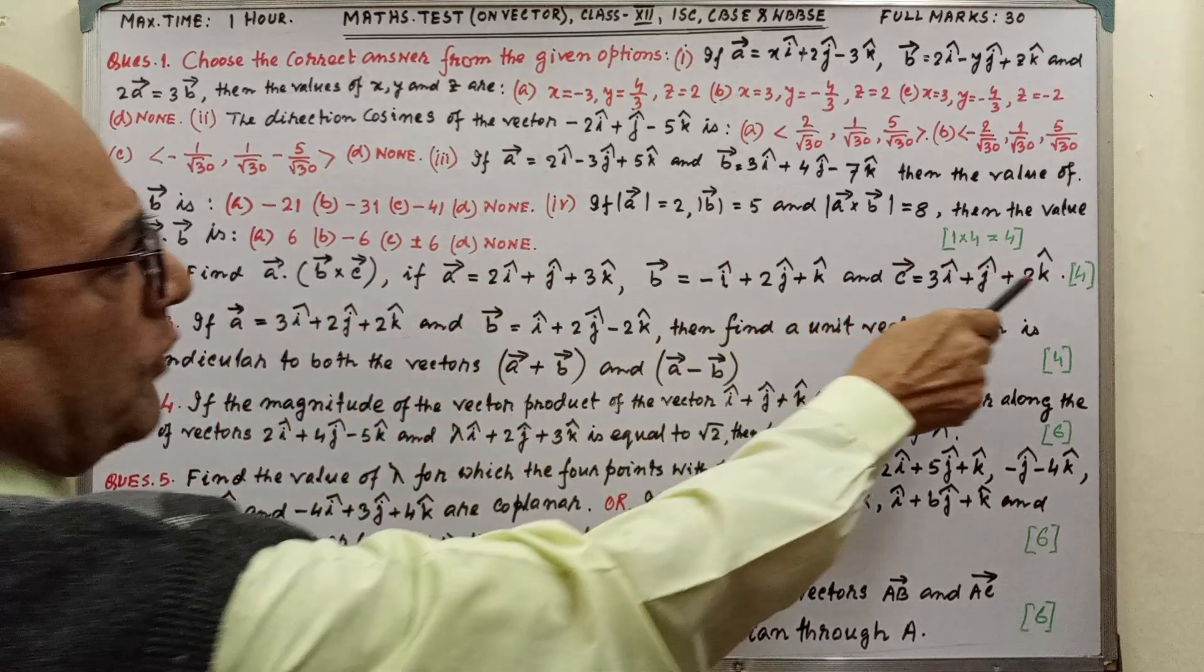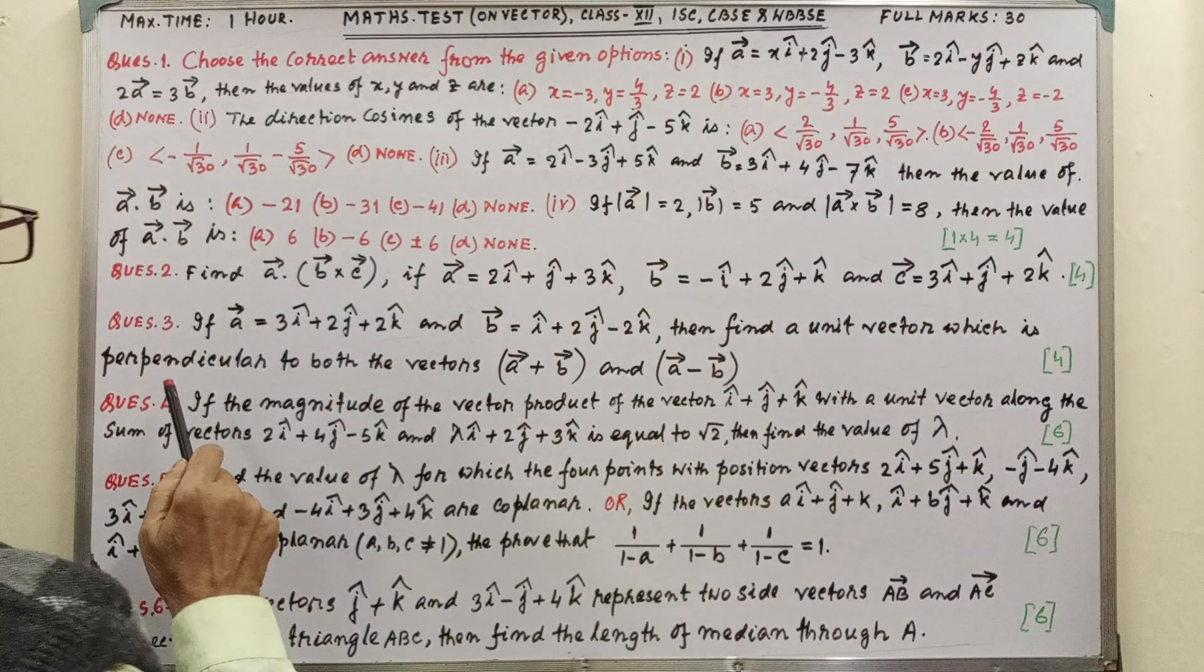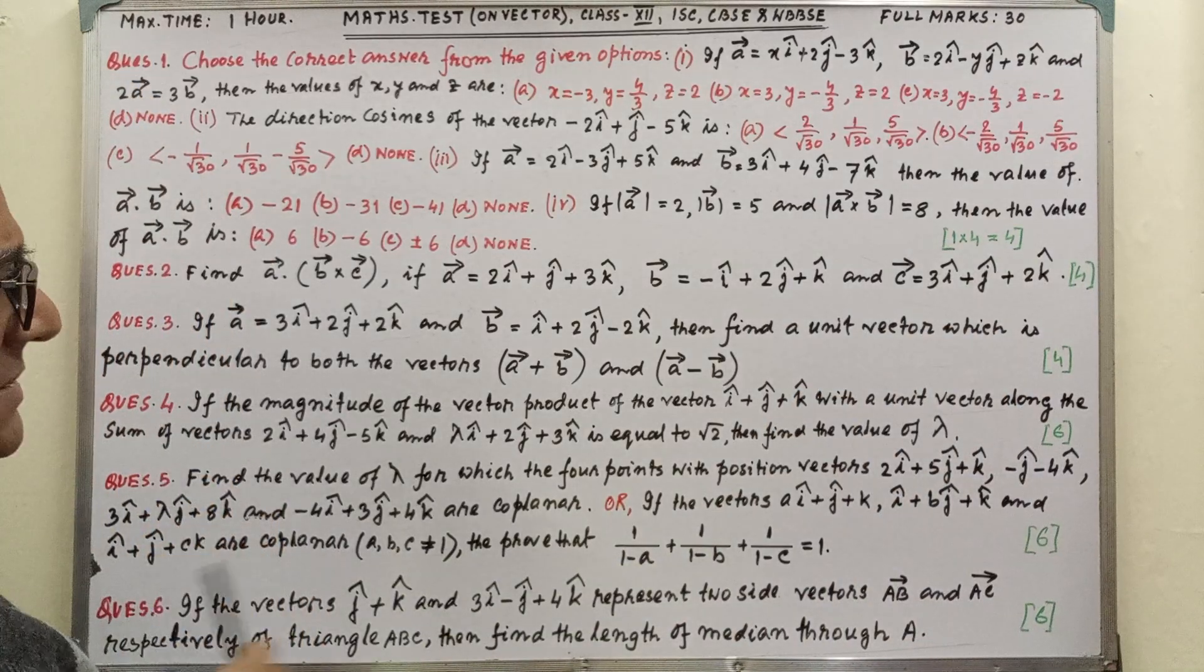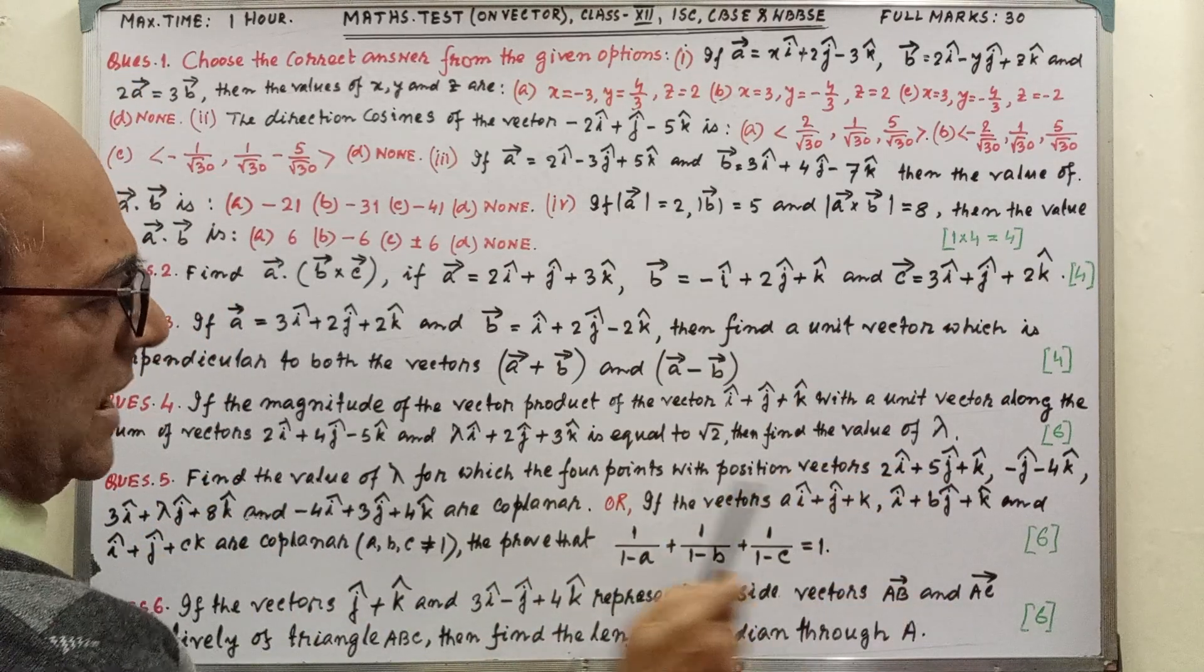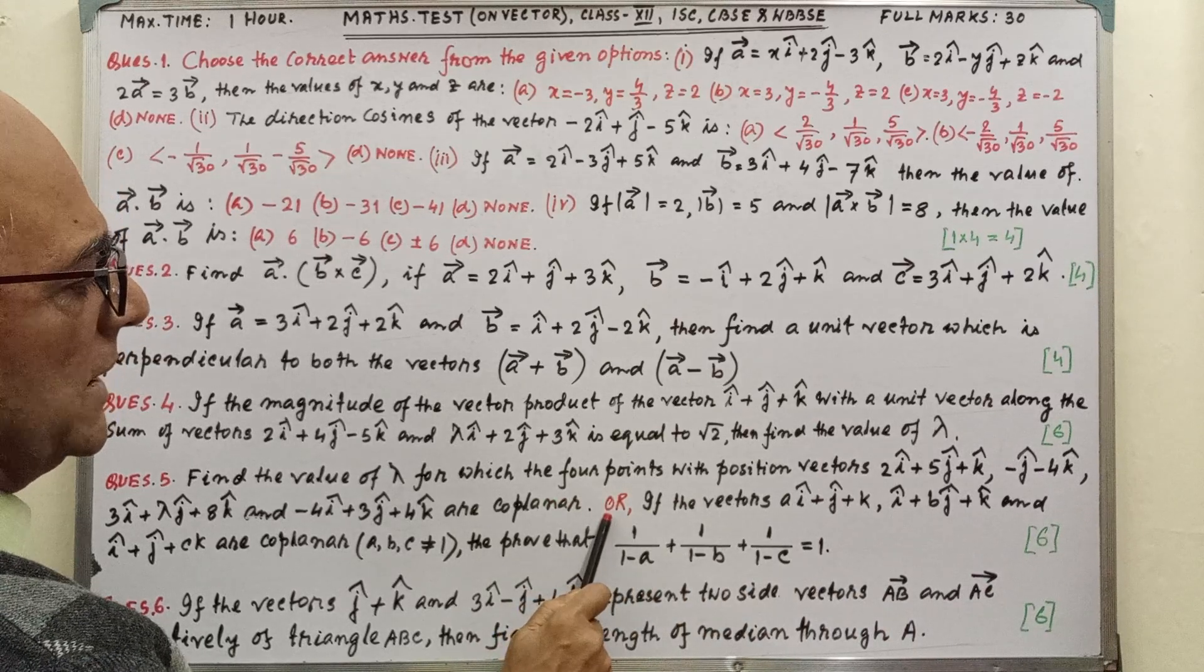Questions two, three, and four are four marks each. Questions four, five, and six are six marks each. Question number five has an internal option.